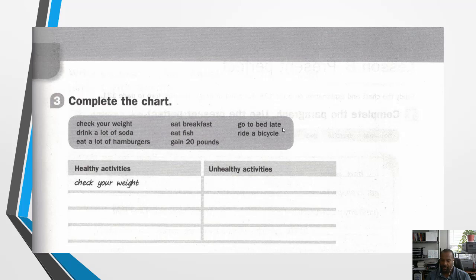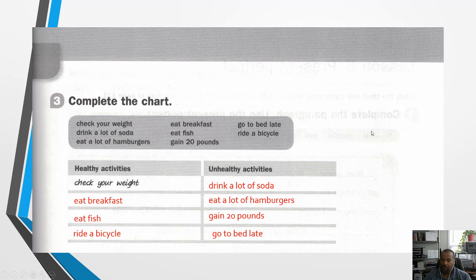Now that we know how to say these correctly, we can put them in the correct columns — healthy or unhealthy activities. The first one is done for us: check your weight is under healthy activities. I also wrote under healthy activities: eat breakfast, eat fish, and ride a bicycle. Under unhealthy activities I wrote: drink a lot of soda, eat a lot of hamburgers, gain 20 pounds, and go to bed late.